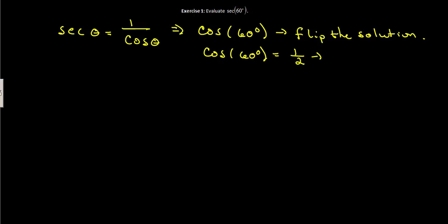Which means if we flip 1 half we get 2 over 1, which is the same as the secant of 60 degrees. And we want to reduce that: 2 over 1 is obviously 2. So the secant of 60 degrees is equal to 2.